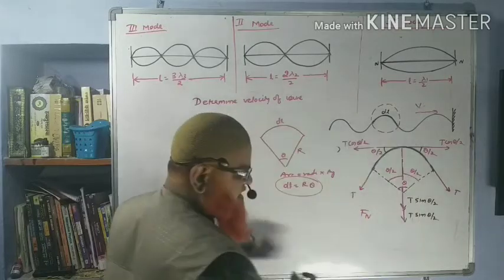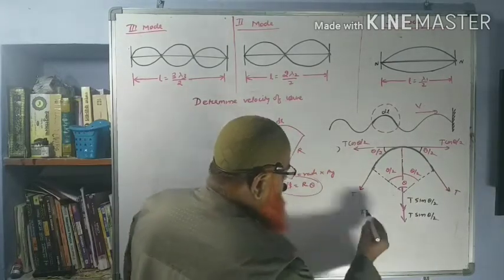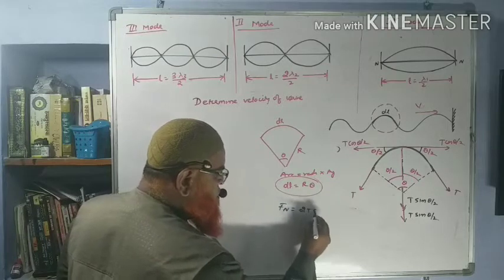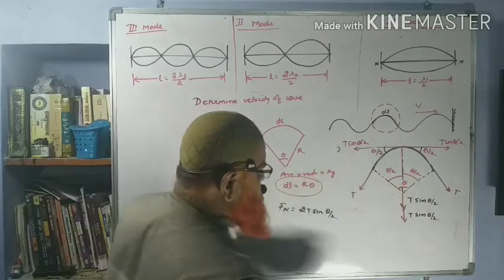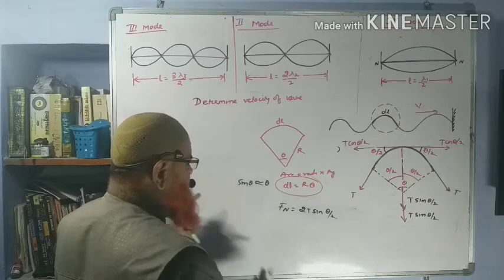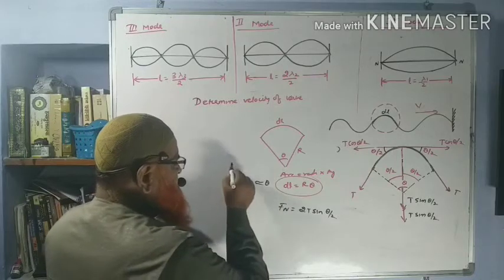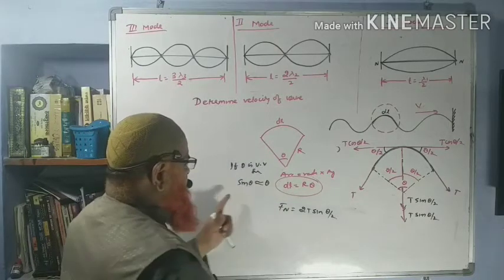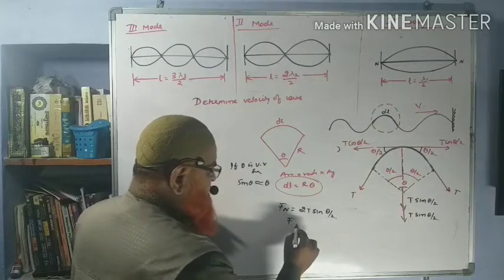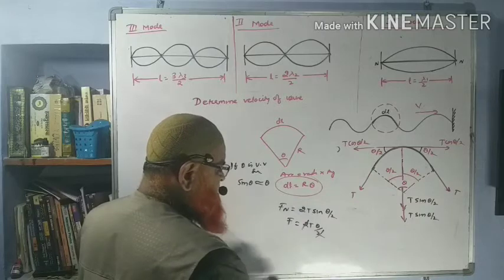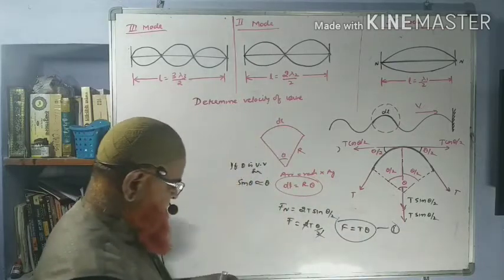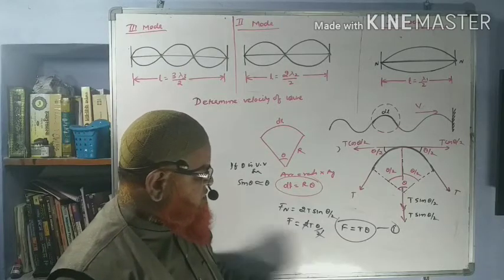The net force acting on this string: for very small angles, we know that sin(θ) approximately equals θ. So T·sin(θ/2) becomes T·(θ/2), and the net downward force is 2·T·(θ/2), which gives F = T·θ. This is equation number 1.